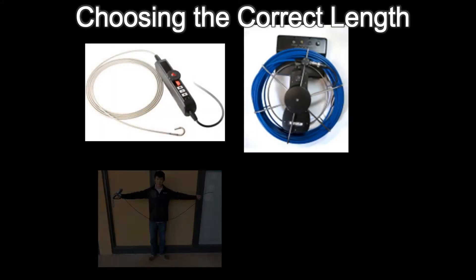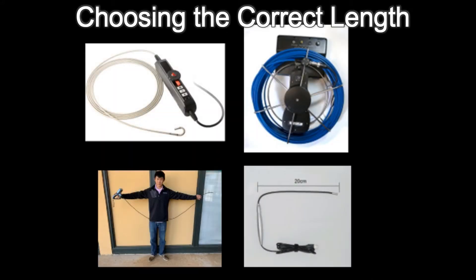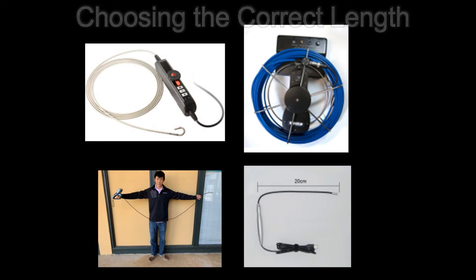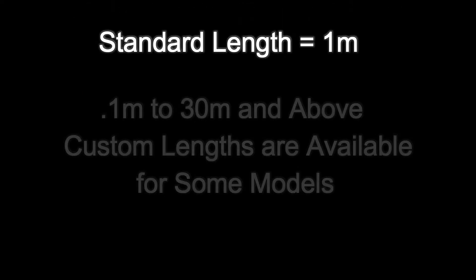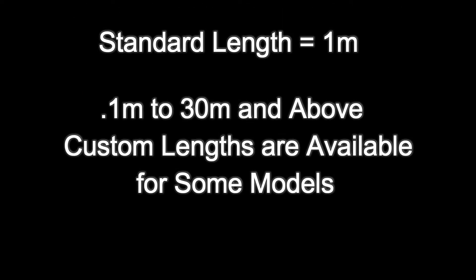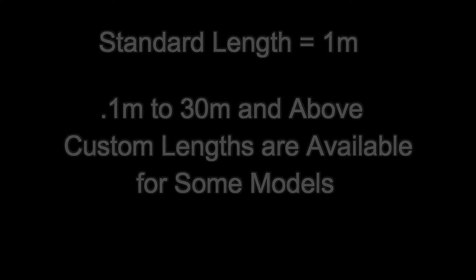Choosing the correct length for your camera probe is important. Consider how far you need to extend inside an enclosure. The standard length for a lot of boroscopes is 1 meter, but greater lengths are available for certain models. Boroscope lengths typically range from 1 meter all the way up to 30 meters and above.